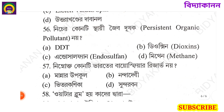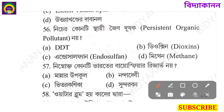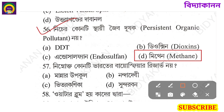Question 54: which of the following is a persistent organic pollutant? Options: DDT, dioxin, methane. Answer is option D — methane is not a persistent organic pollutant.